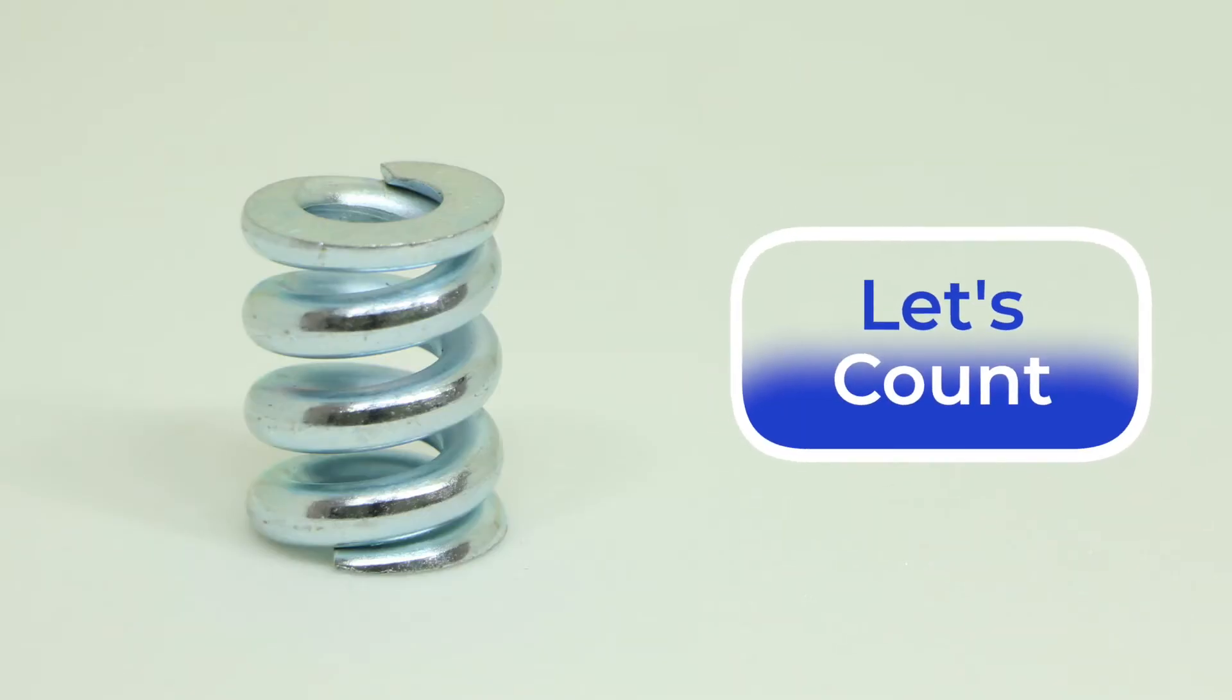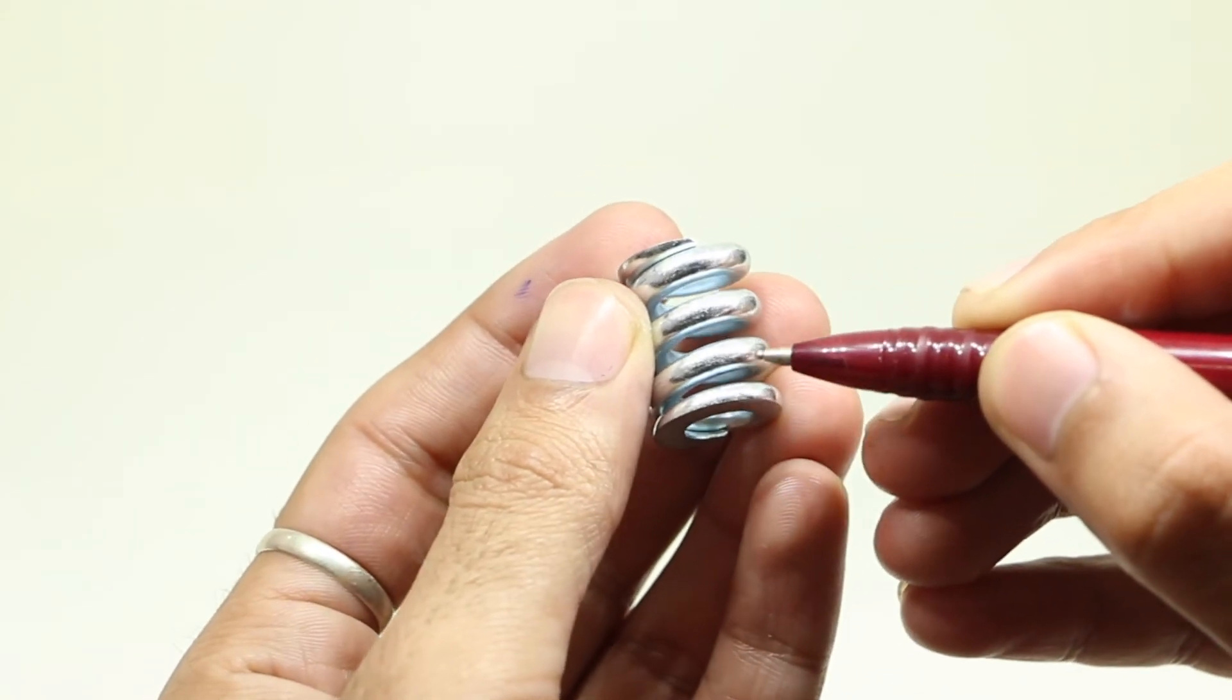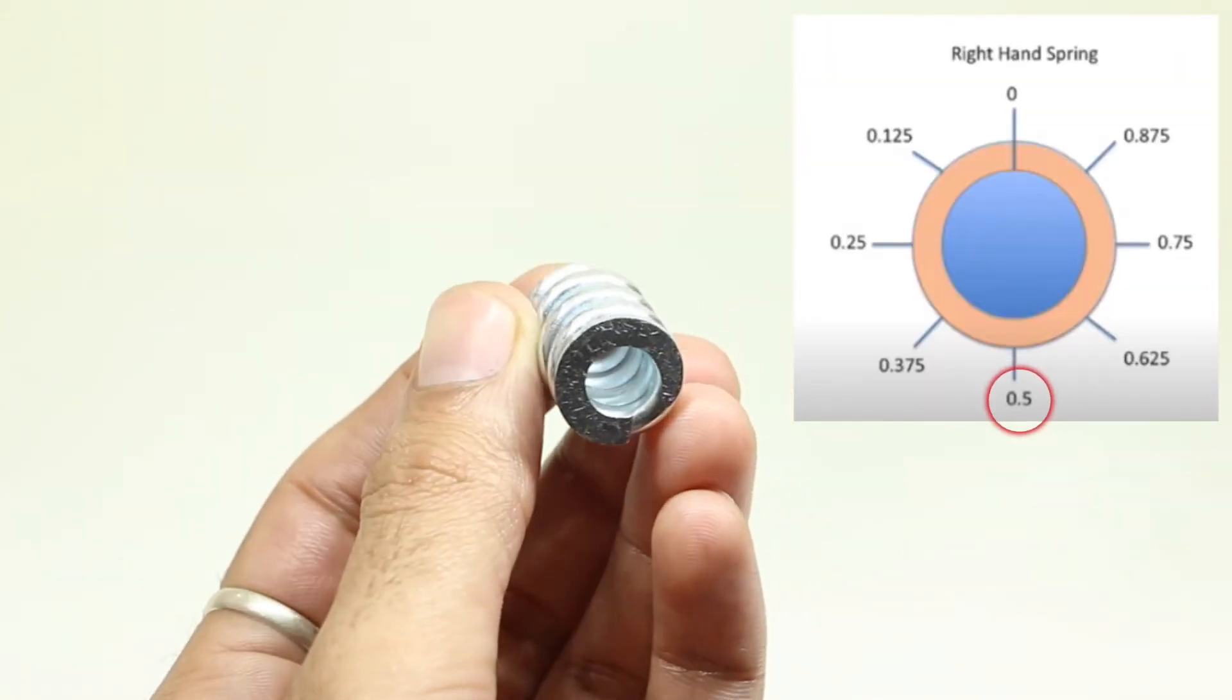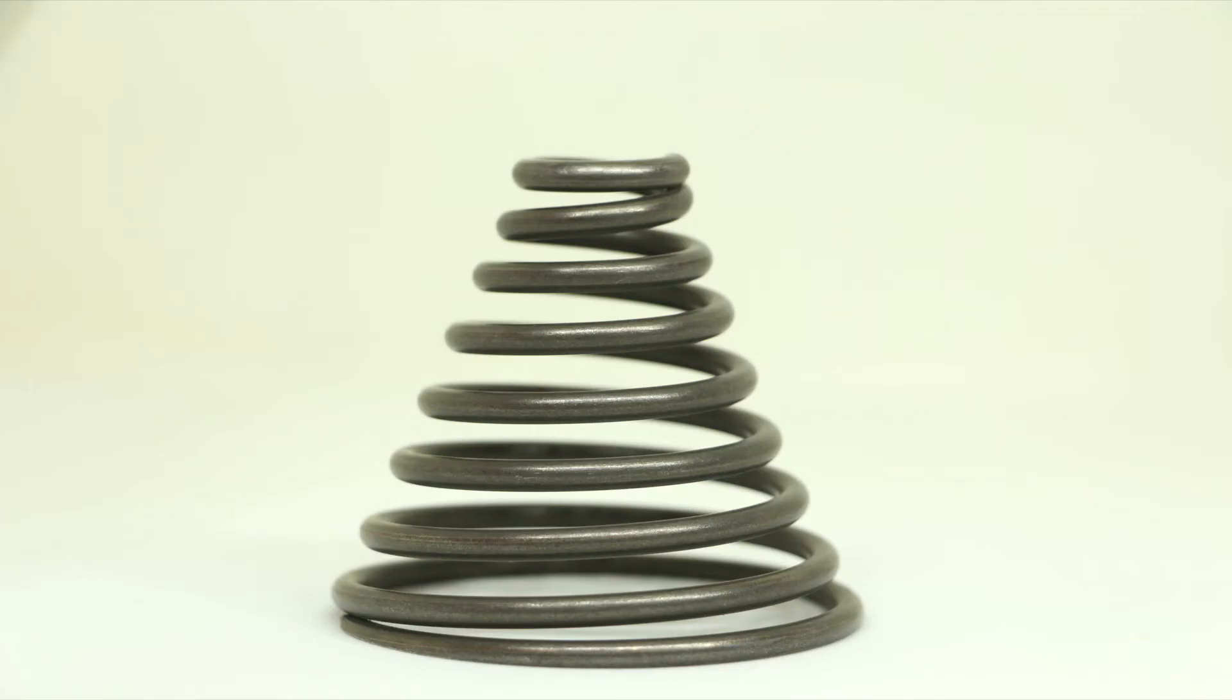Let's count the number of coils for the medium sized compression spring. 1, 2, 3, 4 and 4.5 which implies that the number of coils in medium compression spring are 4.5 coils.